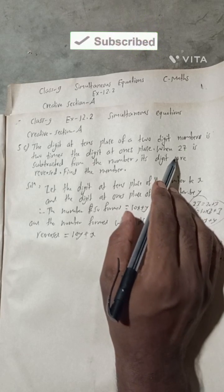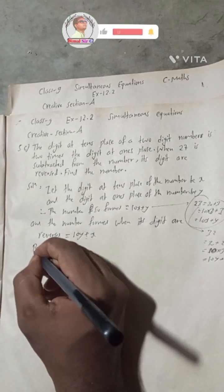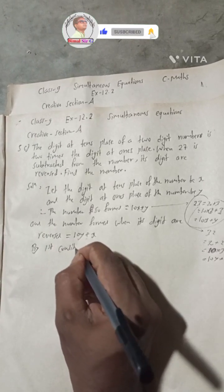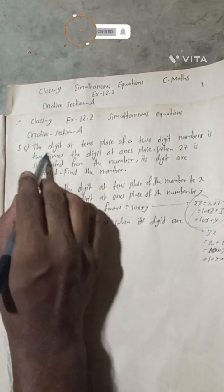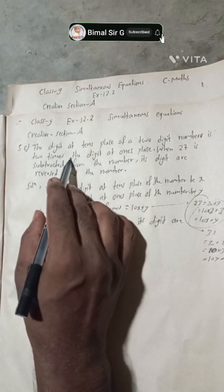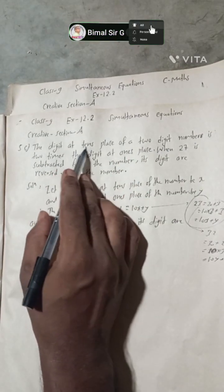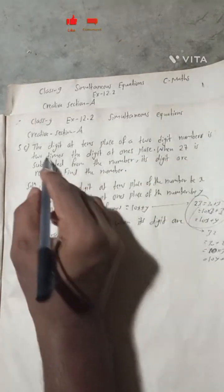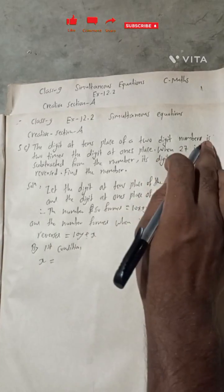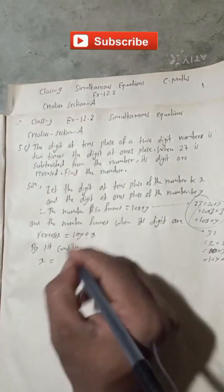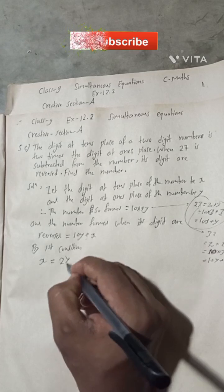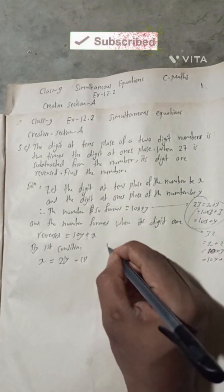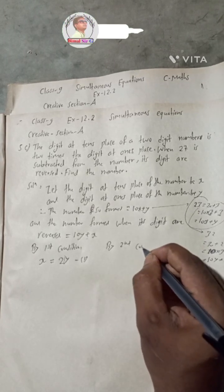By the first condition: the digit at the tens place of the two-digit number is two times the digit at the ones place. So the tens place digit x equals two times the ones place digit y. Therefore our first equation is: x = 2y.